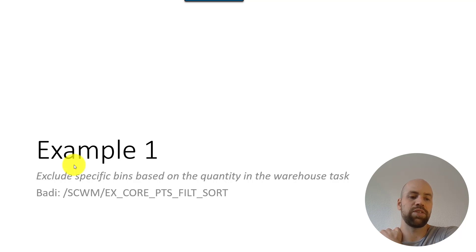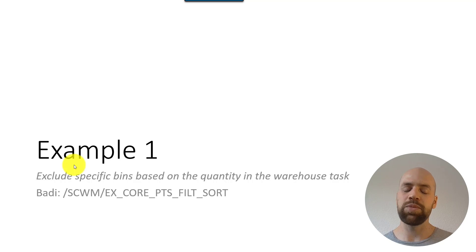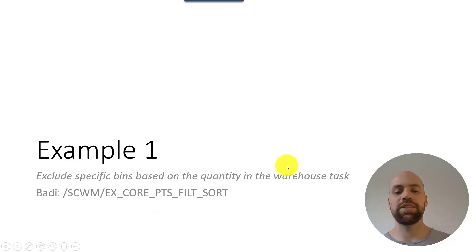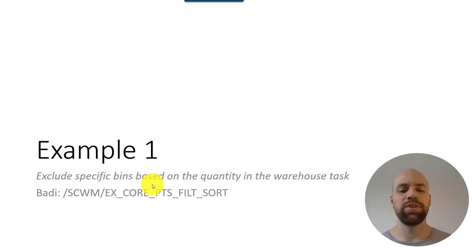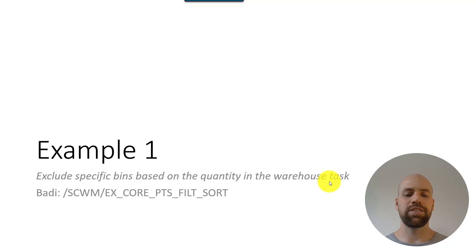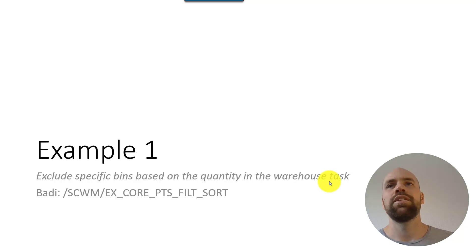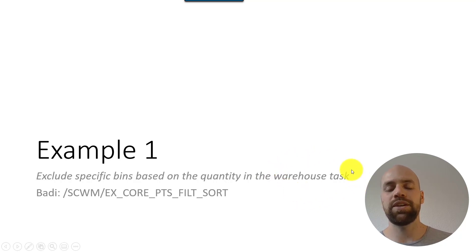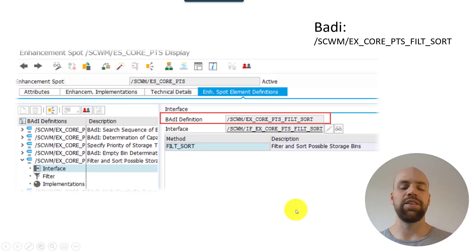Example one — and this is intentionally a simple scenario just to demonstrate the technique. We want to exclude specific bins from the possible put away bins based on the quantity from the warehouse task. For instance: if the quantity is 15, regardless of unit of measure, we want to exclude all bins starting with the letter 'B.' The BAdI to use is SEWM_ES_CORE_PTS third sort.